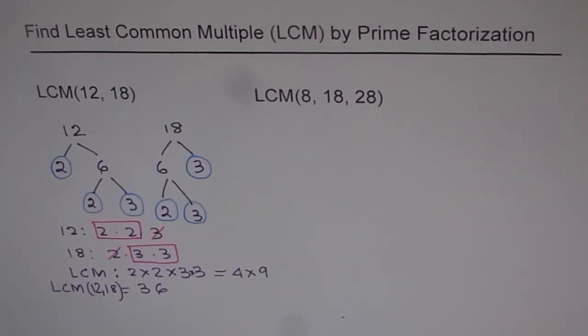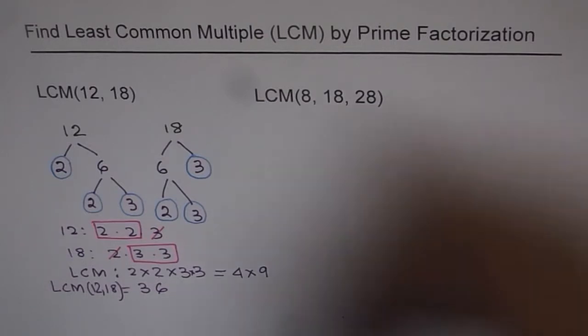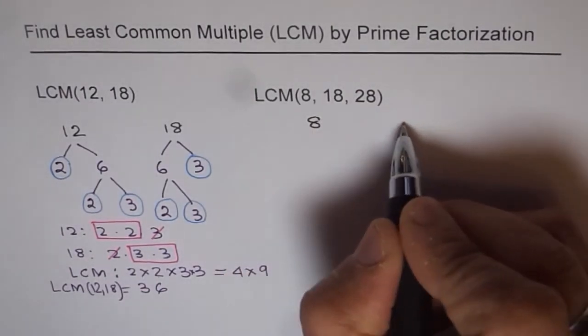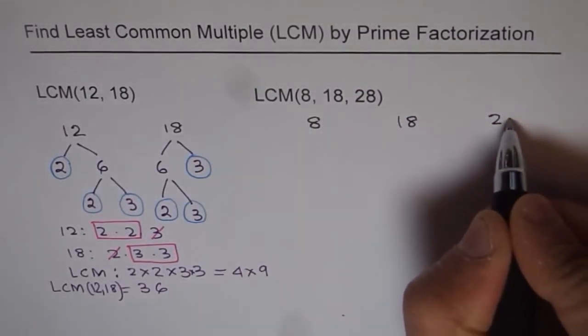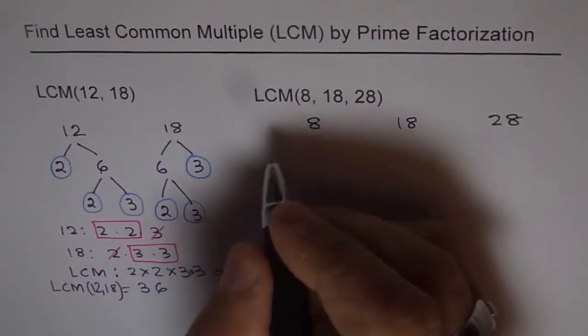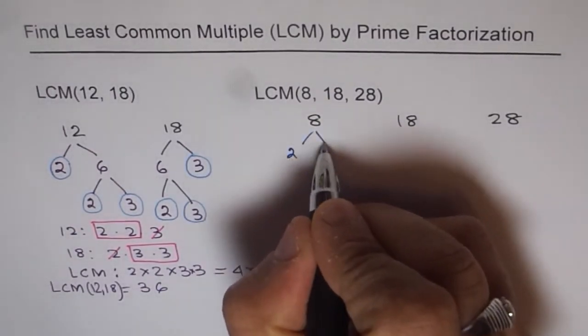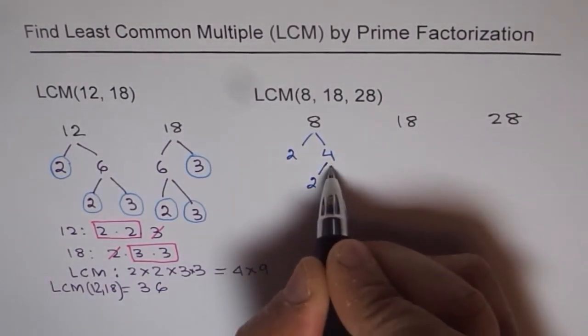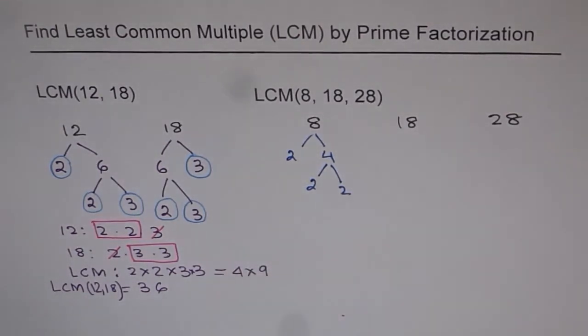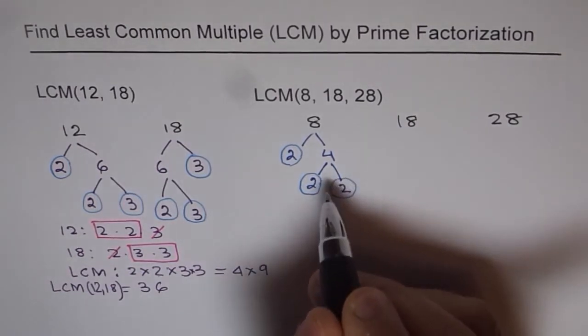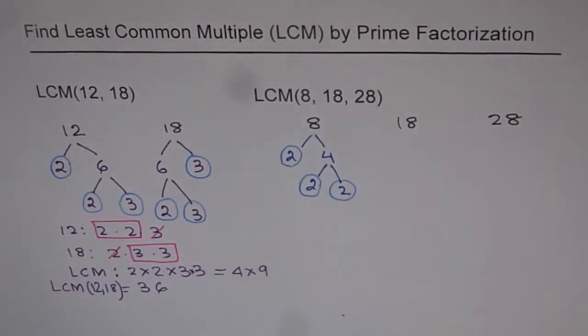Now, let's extend the same technique to 3 numbers and see how the process can be done. For 3 numbers, let's list all the 3 numbers and then find prime factors. As we did earlier, for 8, we can start with 2 times 4, and 4 is a composite number, so we can still factor it. It is 2 times 2. So, we get 2, 2, 2. Now, that is all the prime numbers. So, 8 can be written as 2 times 2 times 2.